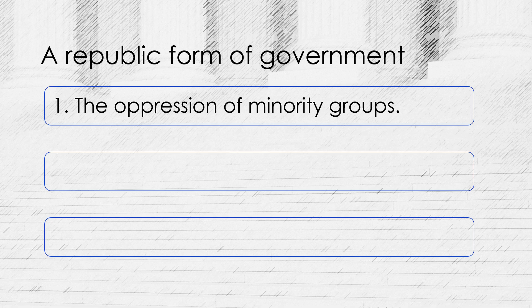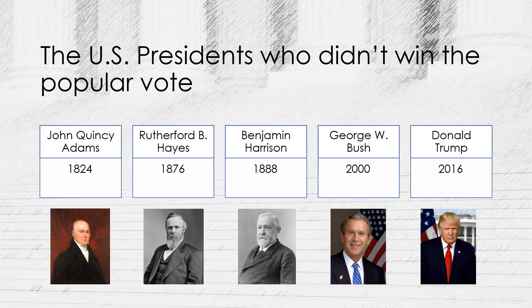One downside of the electoral system is that candidates often focus their campaigning and resources on swing states, where the outcome of the election is uncertain. Another downside is that it is possible for a candidate to win the presidency without winning the popular vote. There have been five such elections: John Quincy Adams in 1824, Rutherford B. Hayes in 1876, Benjamin Harrison in 1888, George W. Bush in 2000, and Donald Trump in 2016.